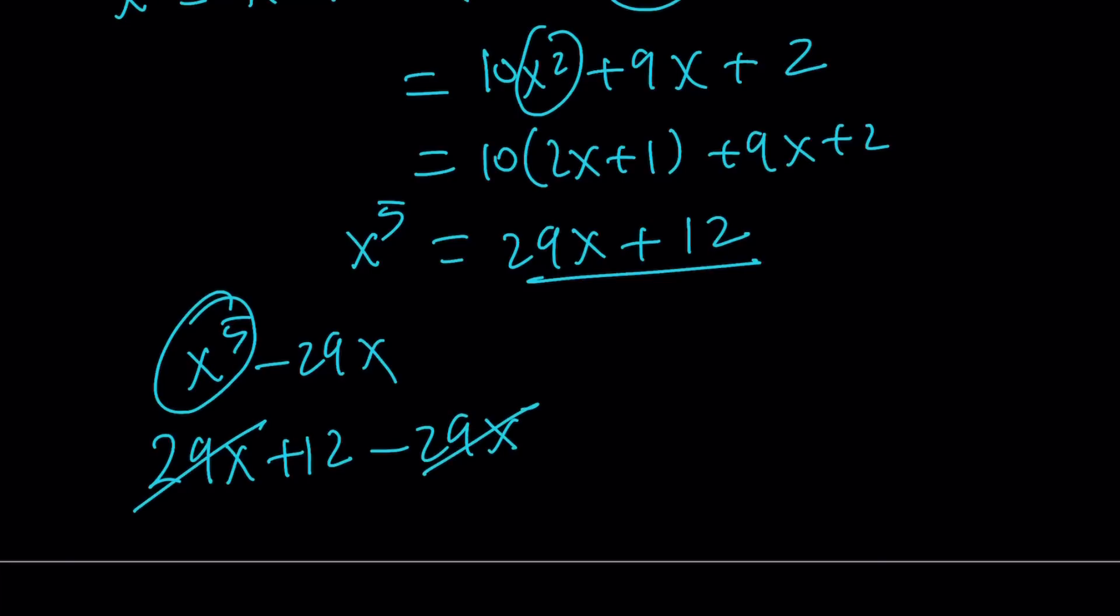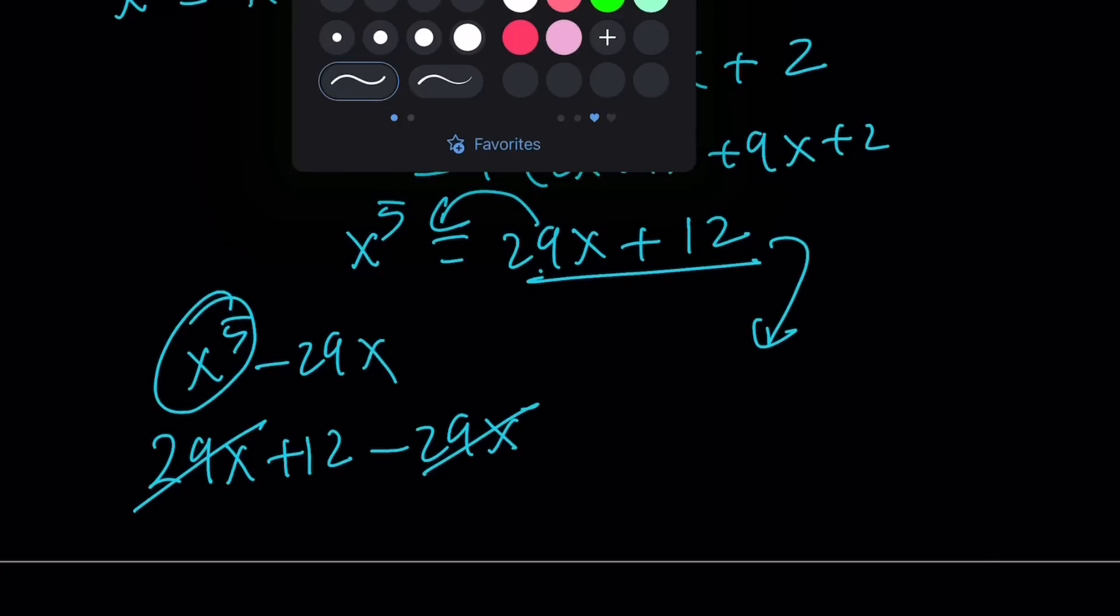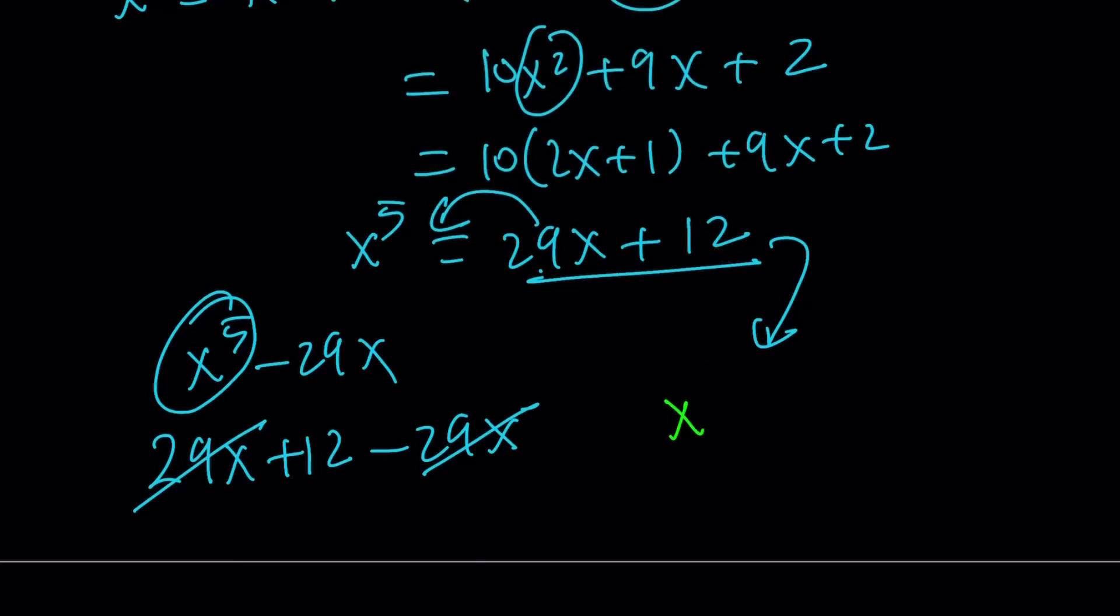Or, just think about it. Subtract 29x from both sides. And this will imply x^5 - 29x = 12. You're just transferring one term from one side to the other. So the answer is 12 again.